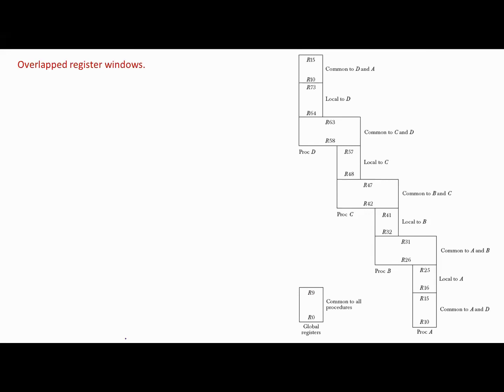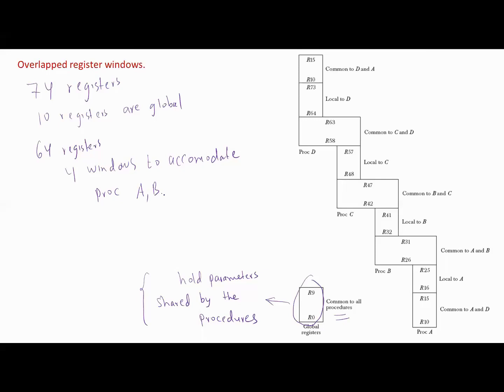Here we have an example of overlapped register windows. The system has a total of 74 registers. Ten registers are global, here R0 through R9. They are common to all procedures, and they are used for parameters shared by the procedures. The other 64 registers are divided into four windows to accommodate procedures A, B, C, and D.